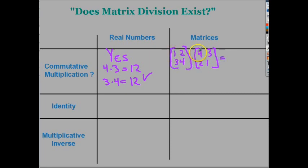I would do 1 times 4 and then plus 2 times 2, which would be 8 total, and that would go here in my A1 spot. And I would continue on to do the other ones, but I'm not going to make you sit through that. So, I end up with 8, 5, 20, and 13.